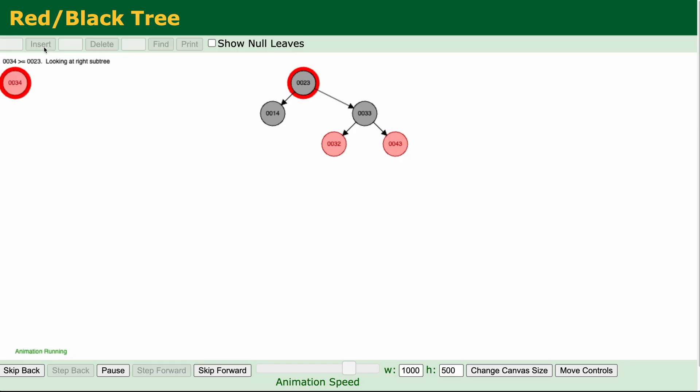A red-black tree is another type of self-balancing binary search tree. It ensures that the tree is approximately balanced by using color properties, red or black, assigned to each node. The red-black tree satisfies several properties including ensuring the longest path from the root to any leaf is no more than twice the length of the shortest path.